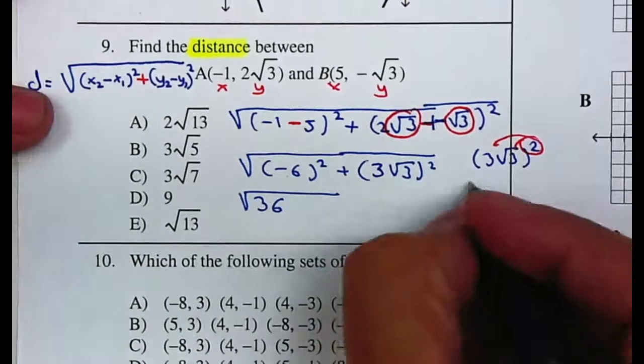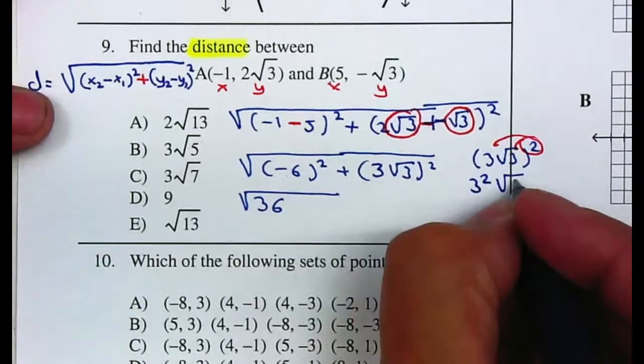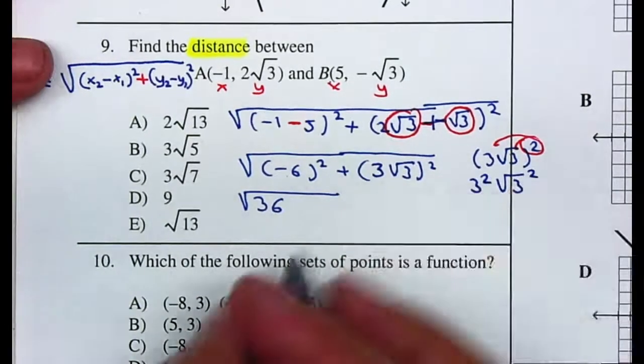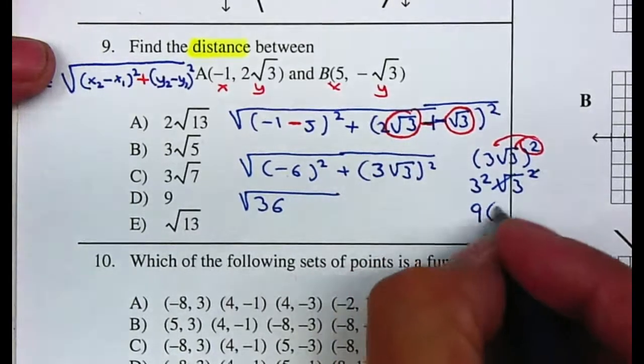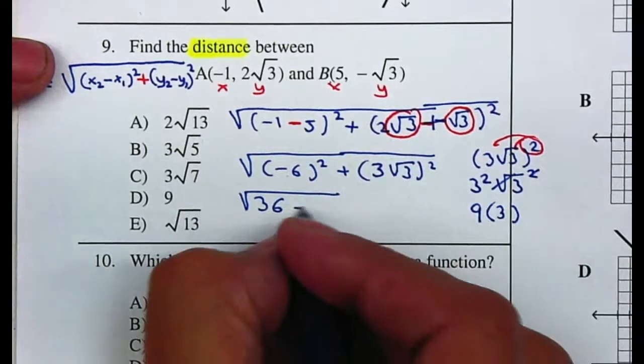That will be the same thing as 3 squared and (√3) squared. 3 squared will give me 9, and the square root and the square cancels, so it will be 3. 9 times 3 will give me 27.